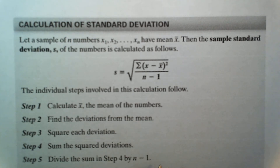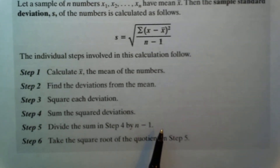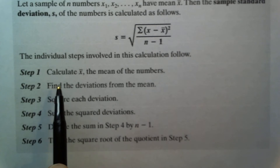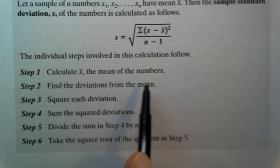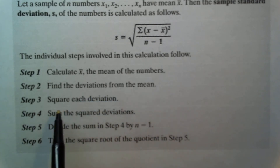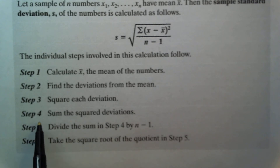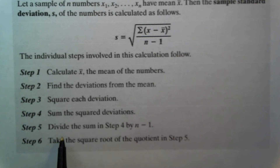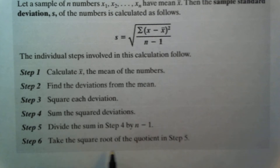There are six specific steps to calculate the standard deviation. Step one: calculate x-bar, the mean. Step two: find the deviations from the mean. Step three: square each deviation. Step four: sum up the squared deviations. Step five: divide that sum by n minus 1. Step six: take the square root of the result from step five. It sounds simple, and I'll give you an example of how it's done.